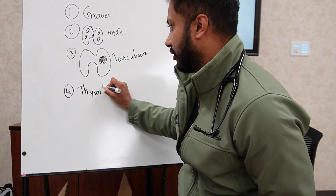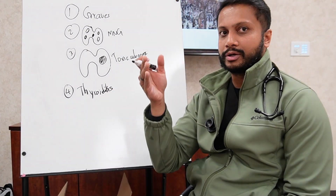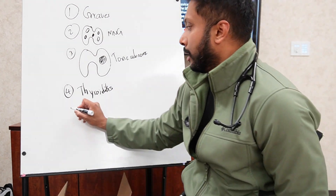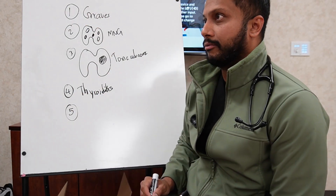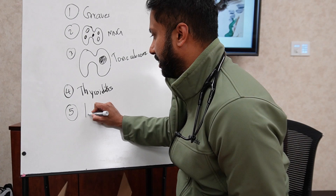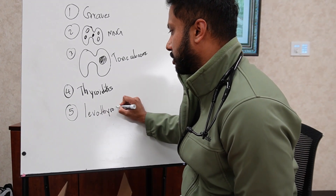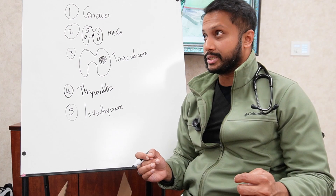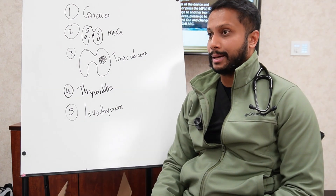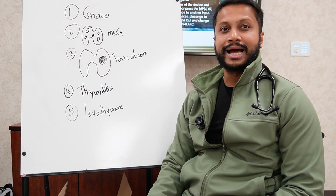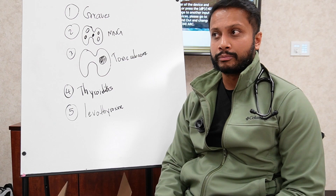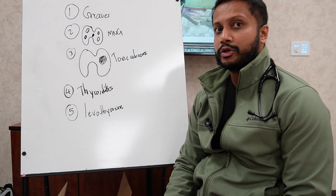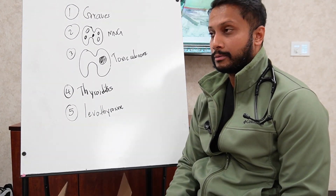Number four is thyroiditis — anything that destroys your thyroid gland will initially cause a hyperthyroid state before leading to hypothyroidism. Number five is surreptitious levothyroxine. For the boards, if you suspect hyperthyroidism based on the clinical stem, your next step is to check TSH first.